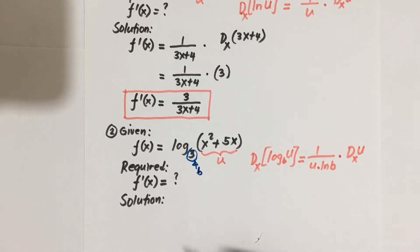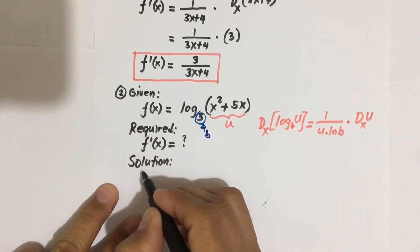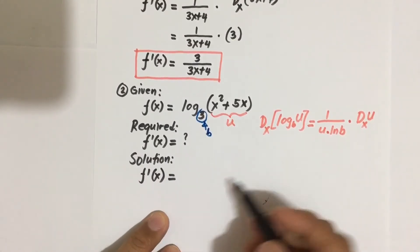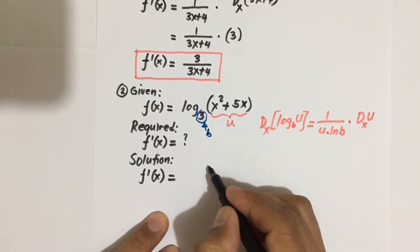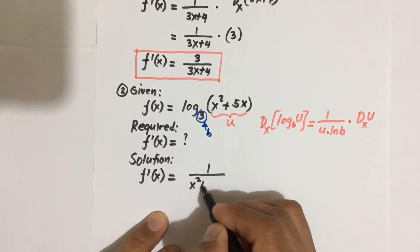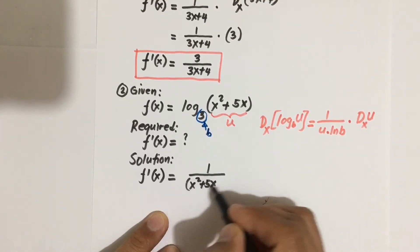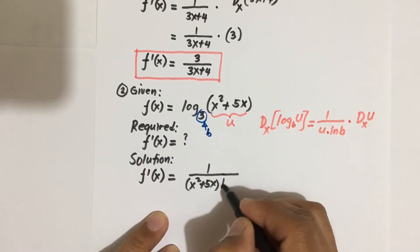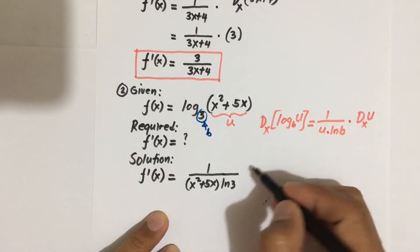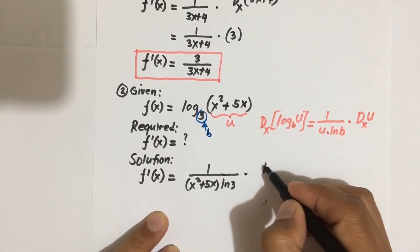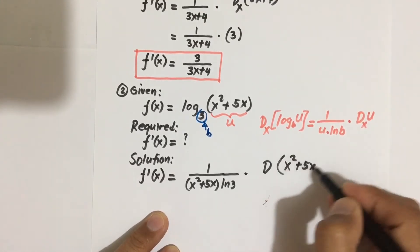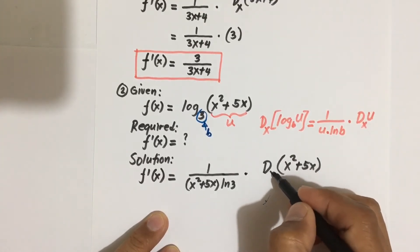Using the formula, F prime of X is equal to 1 over u — where u is x squared plus 5x — multiplied by ln(b), where b equals 3, so that is ln(3), then times the derivative of u. Our u is x squared plus 5x, so we take the derivative of this with respect to X.